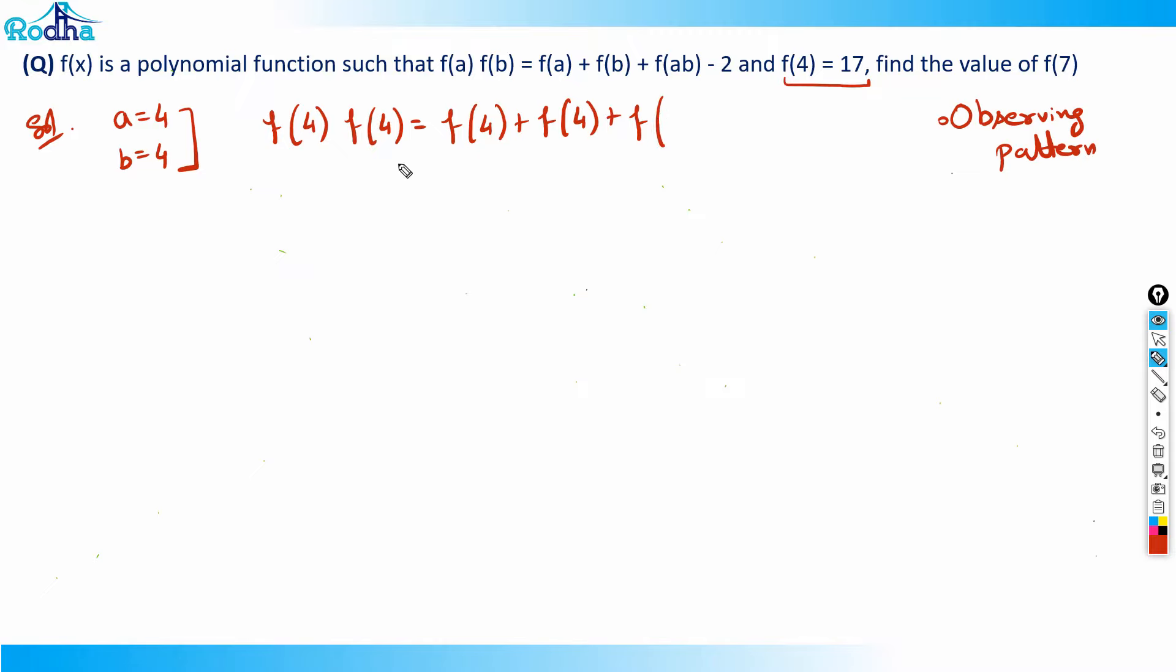Now I can put f(4) as 17, so I get 17·17 = 17 + 17 + f(16) - 2. That means 289 = 34 + f(16) - 2.